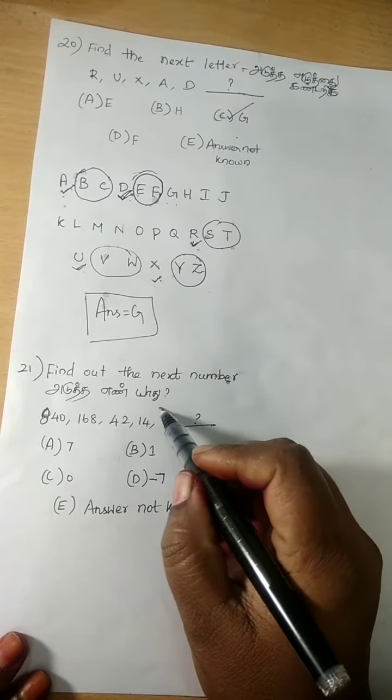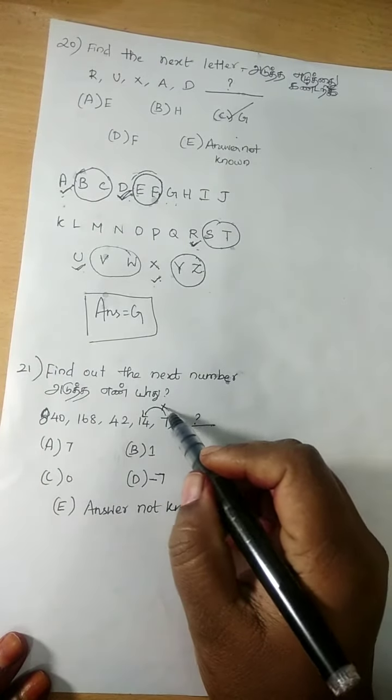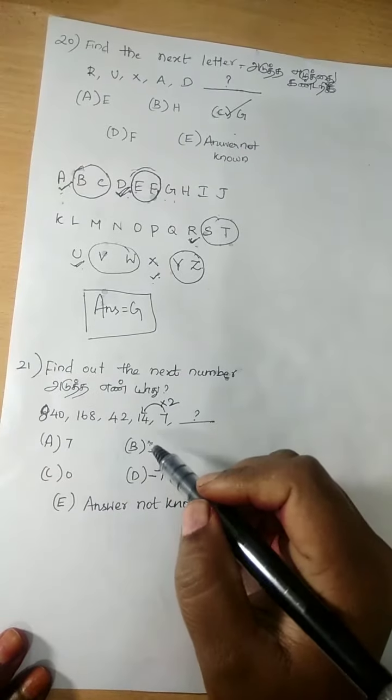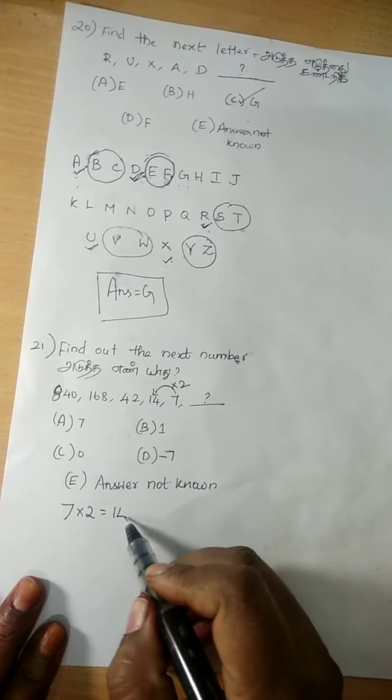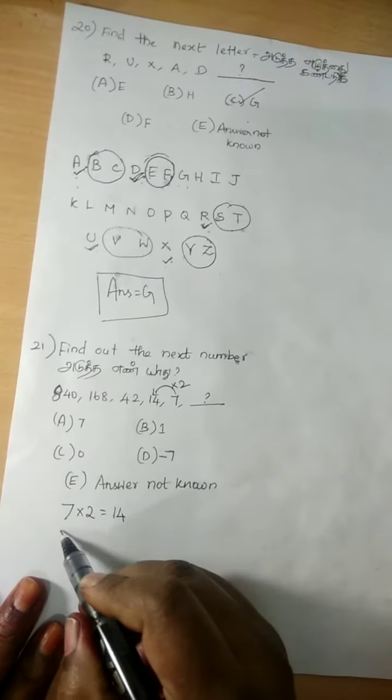7 multiplied by 2, we will get 14. So now, down here, 7 multiplied by 2, we will get 14.